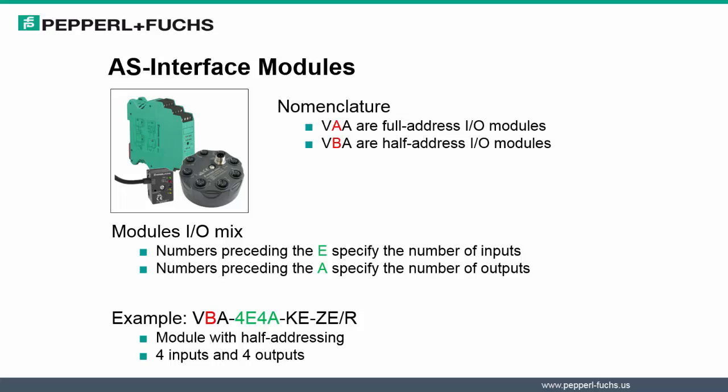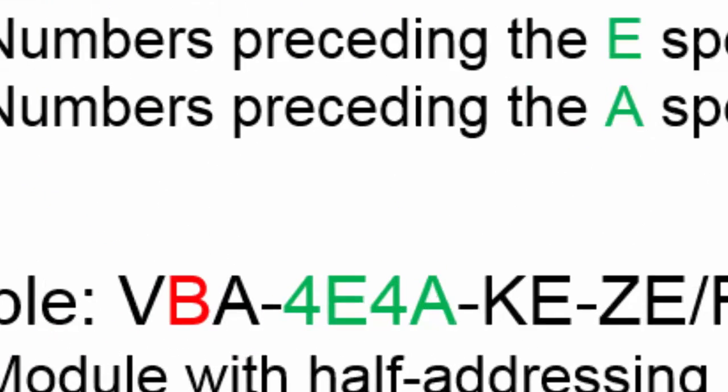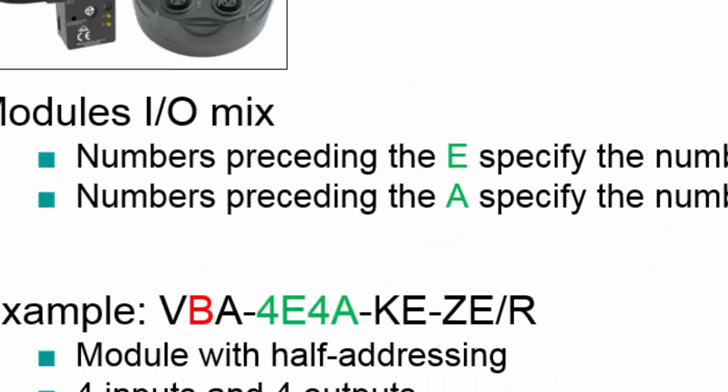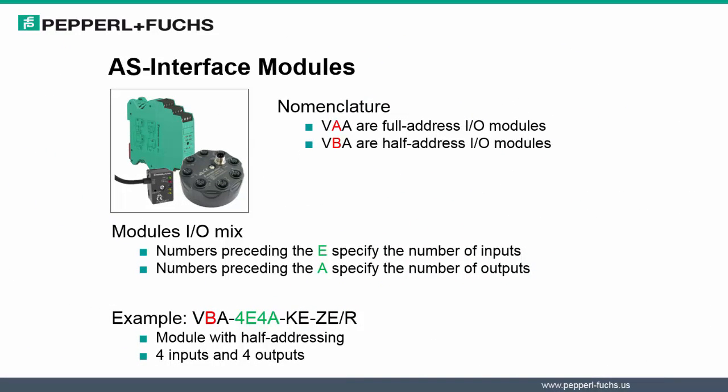Nomenclature can also help determine the IOMix of a module. As we look at our slide, our example shows a module listed as a VBA-4E-4A module. In the first half of the nomenclature, the VBA indicates that the module is a half-addressable module. As we look further in the part number, the 4E-4A signifies the number of inputs and the number of outputs associated to the module.